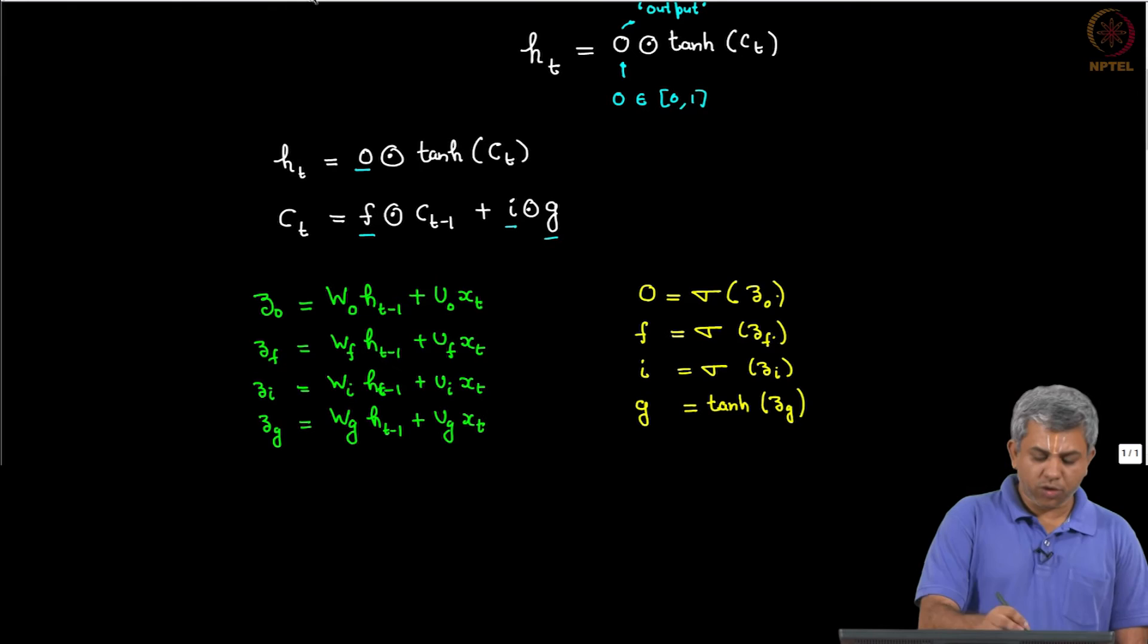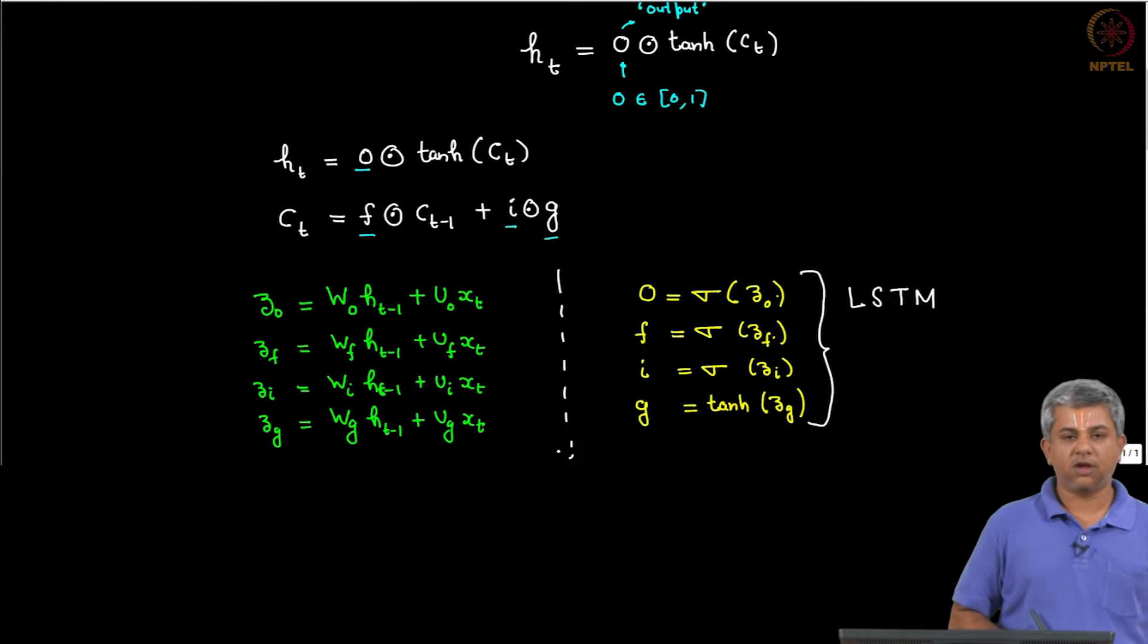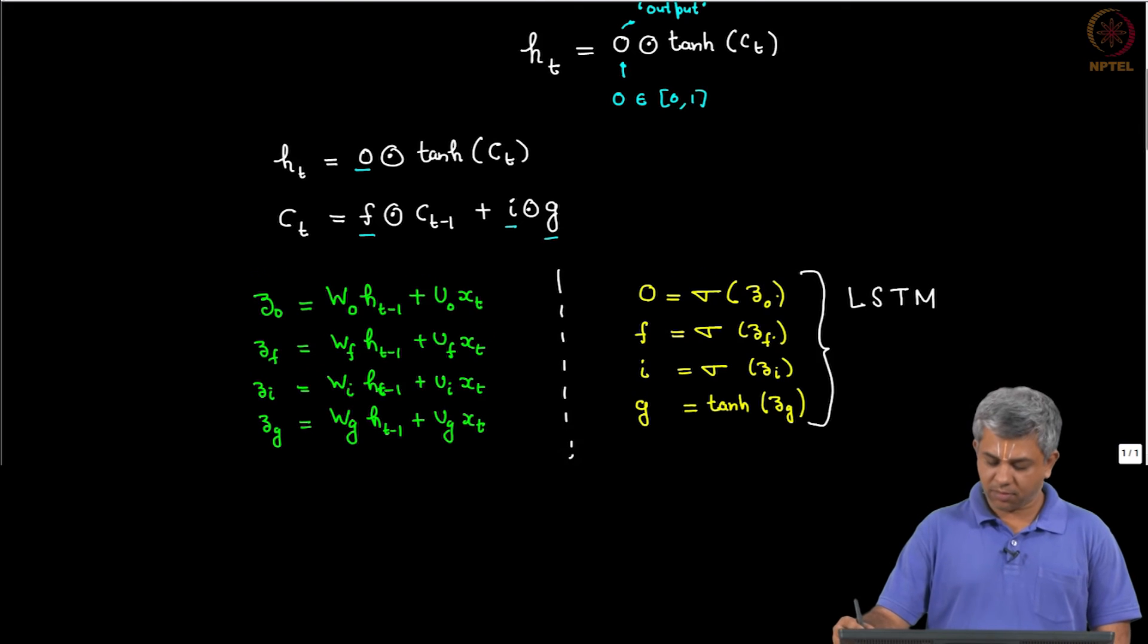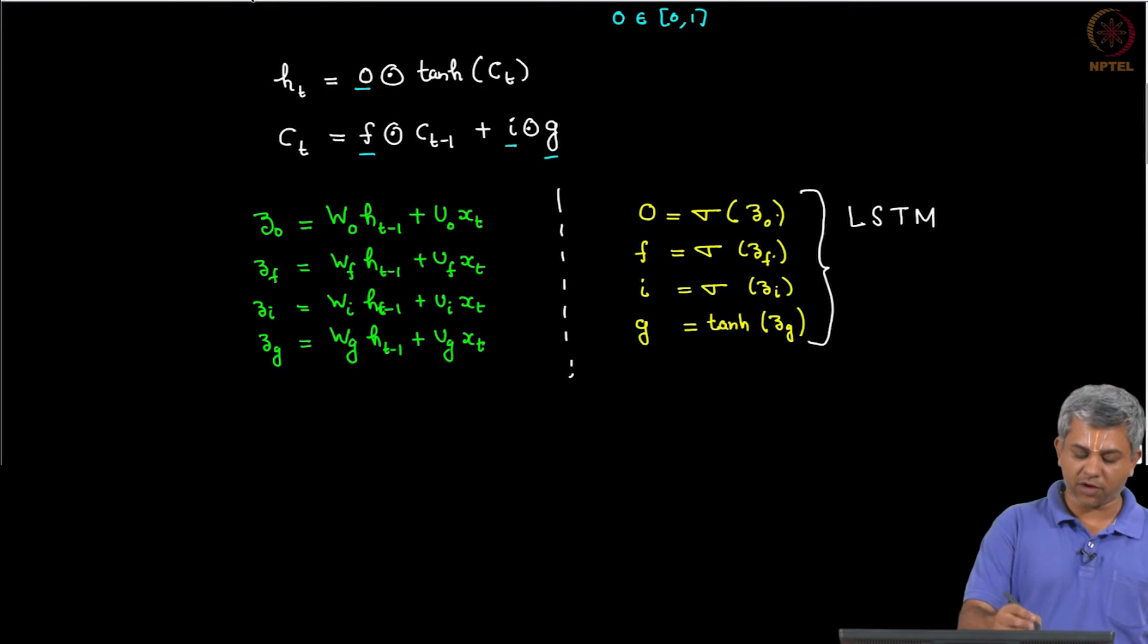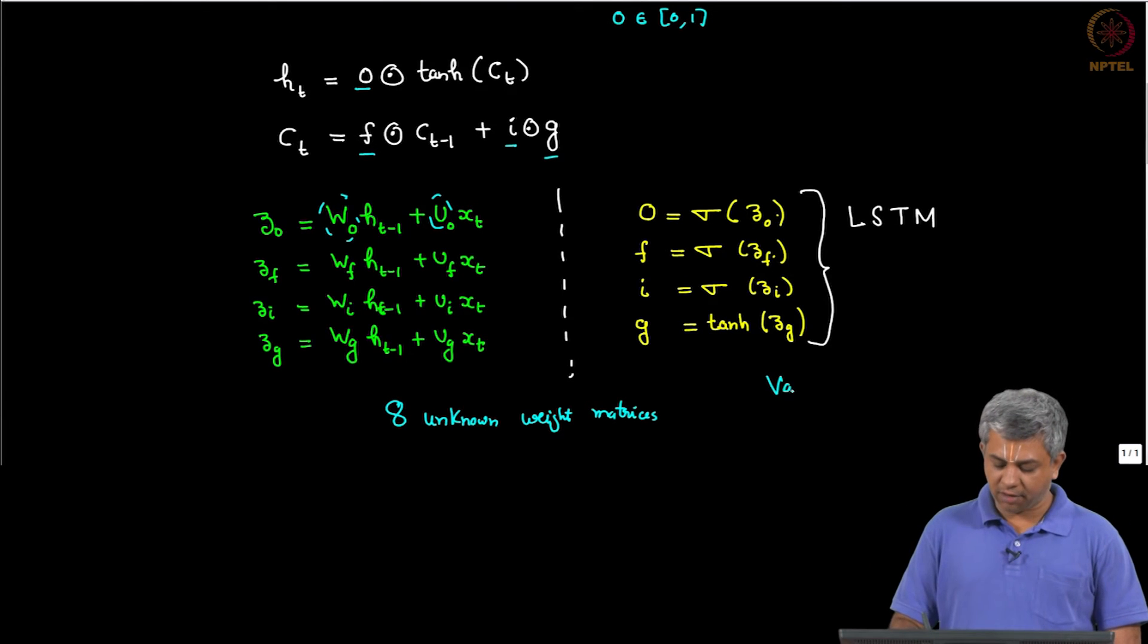All these put together give you LSTM. Now if you see LSTM it has how many unknowns? Whatever be the size of the W matrices, you have 8 unknown weight matrices.